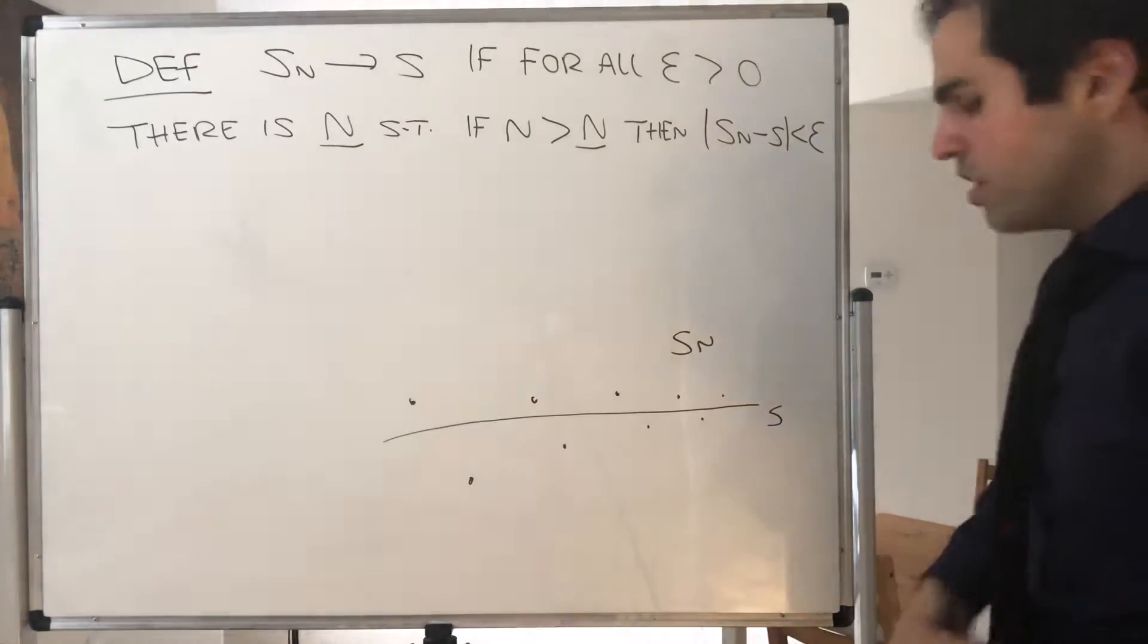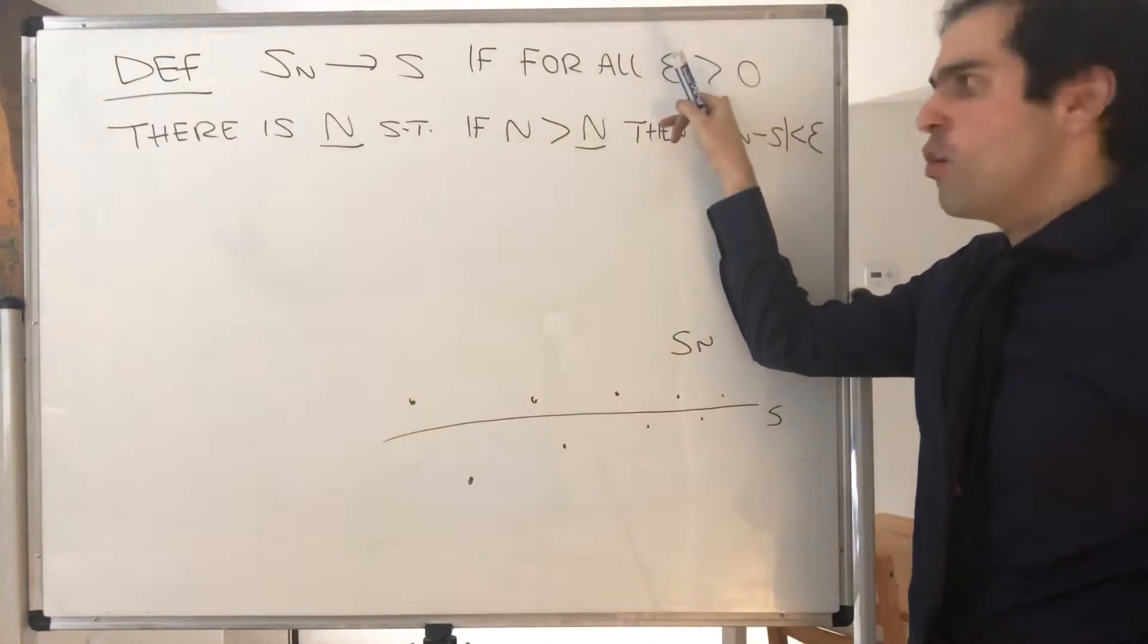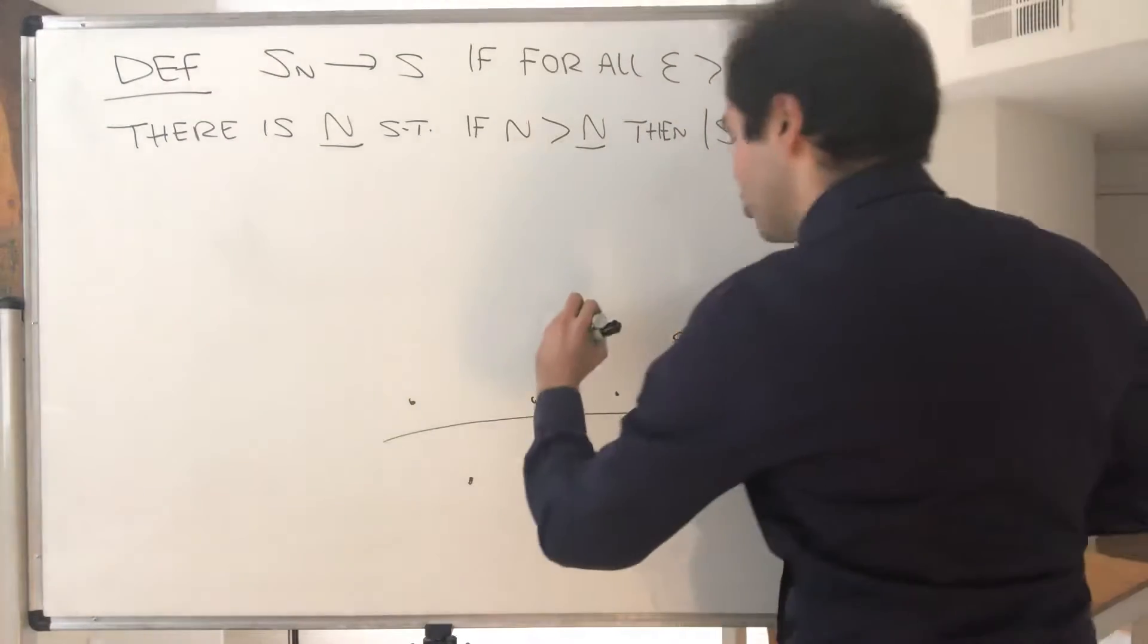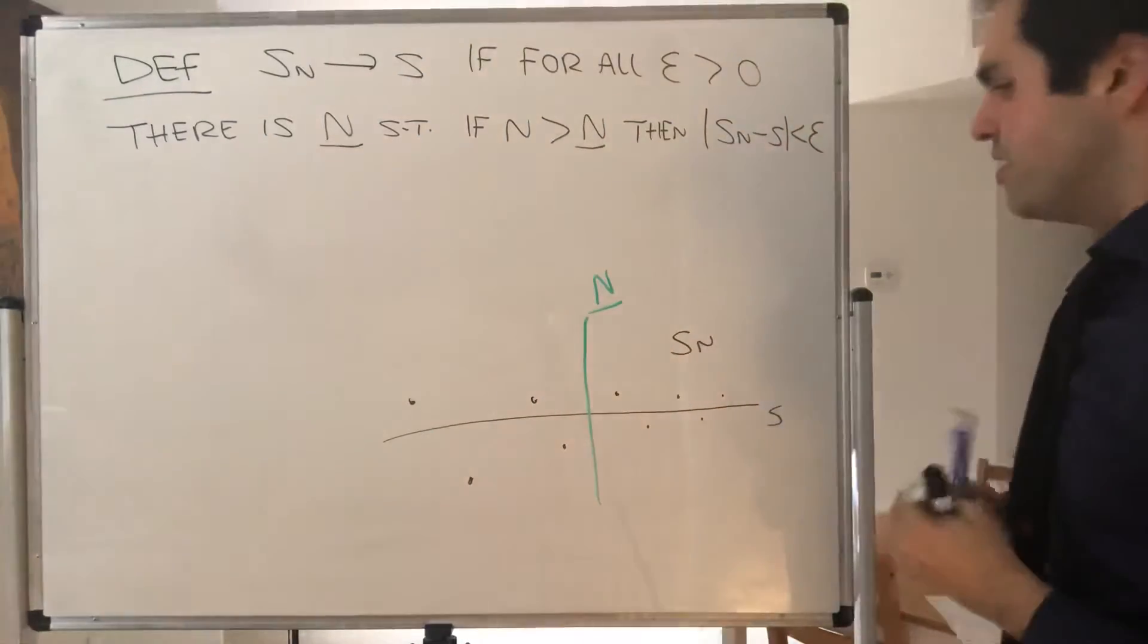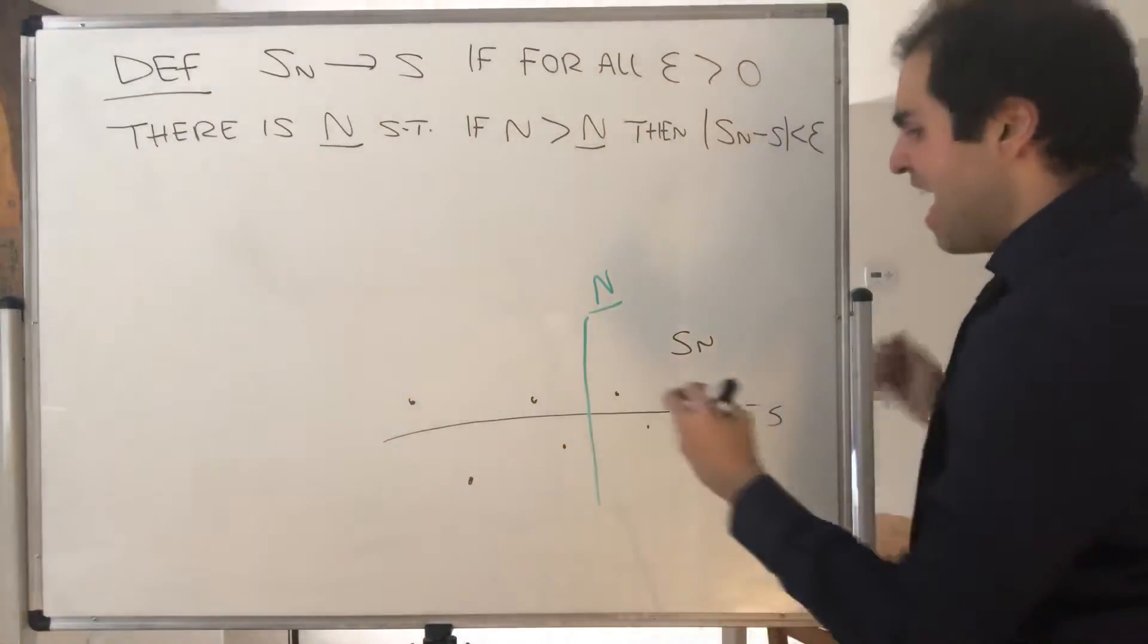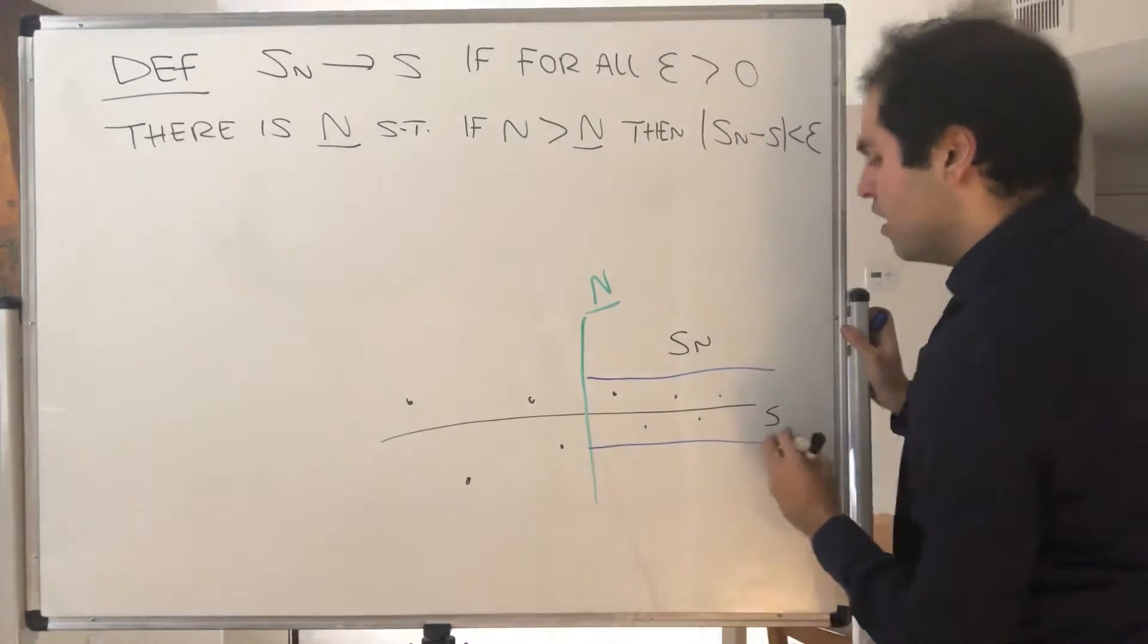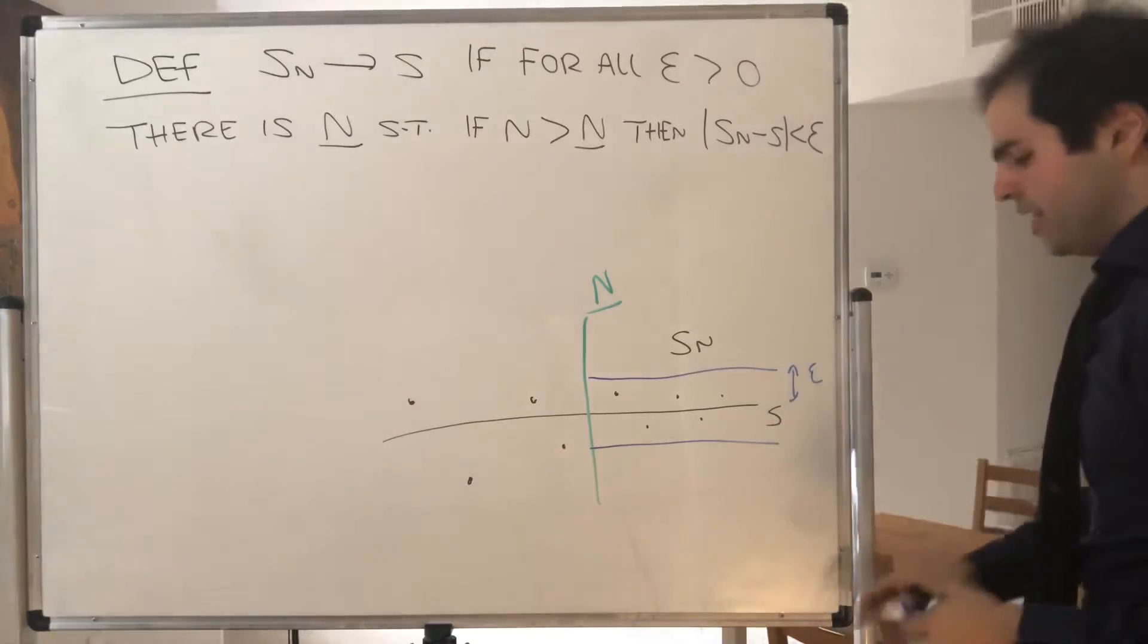Now in other words, what does that mean? It means that no matter how small the error epsilon, you can always find a threshold capital N, like a million or something, such that after this threshold Sn is at most epsilon away from S.